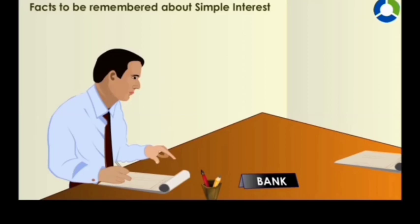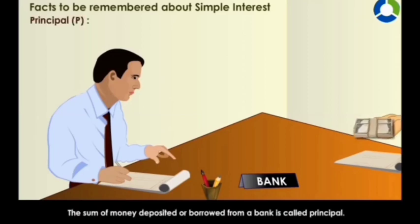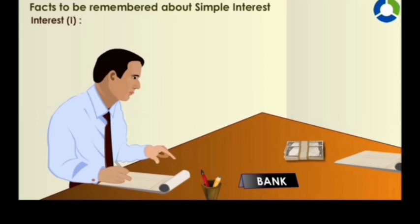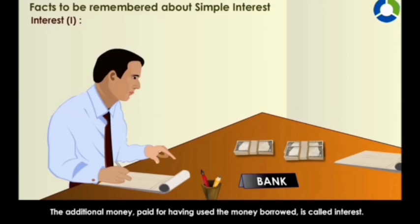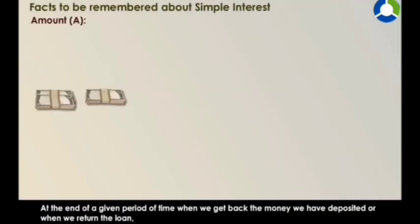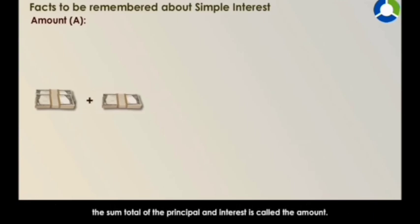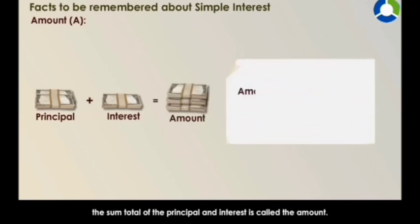Facts to be remembered about Simple Interest. Principle P: the sum of money deposited or borrowed from a bank is called Principle. Interest I: the additional money paid for having used the money borrowed is called Interest. Amount A: at the end of a given period of time, when we get back the money deposited or repay the loan, the sum total of the principal and interest is called the Amount. Amount equals Principle plus Interest, or A equals P plus I.